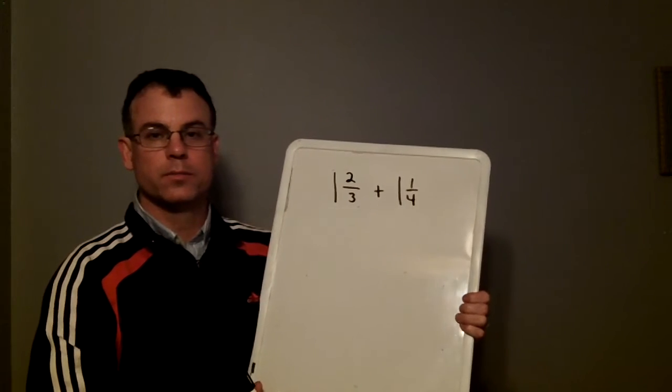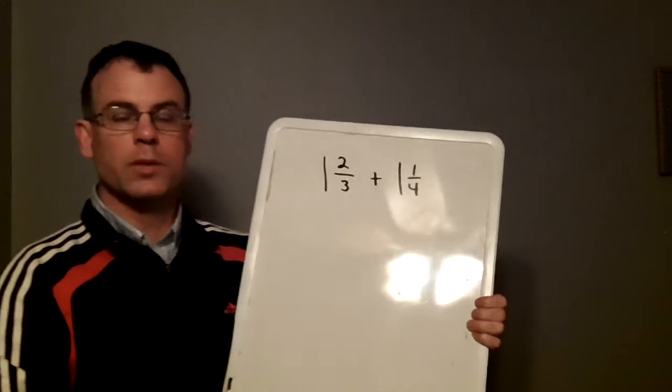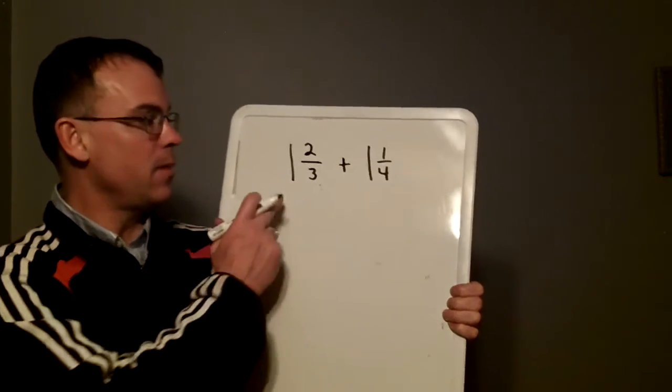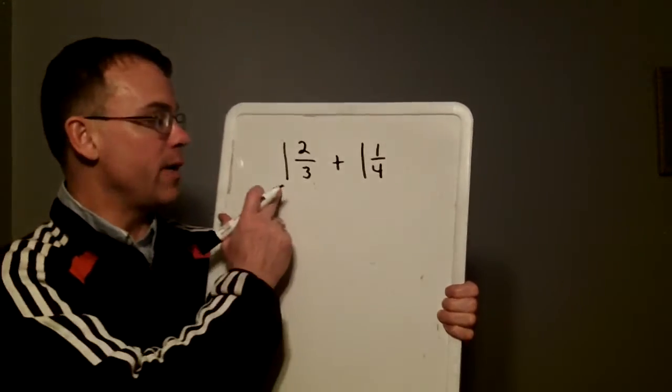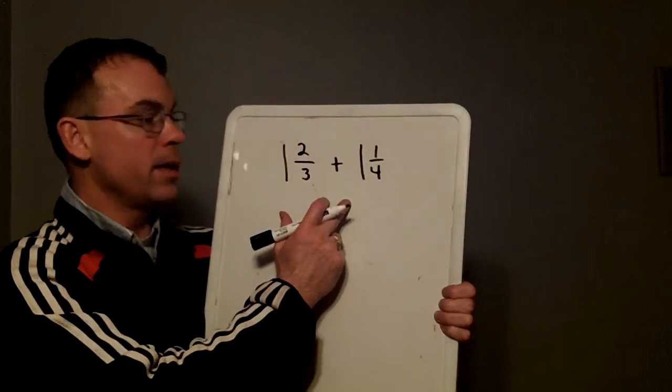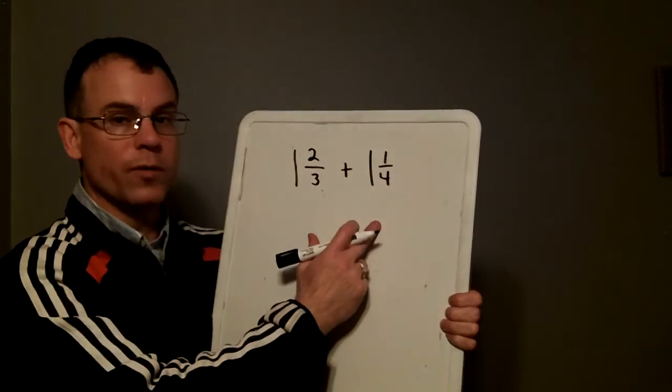Adding Mixed Fractions. In the last example, the denominators were the same in both fractions. In this situation, we have a mixed fraction, one and two-thirds, and another mixed fraction, one and one-fourth.